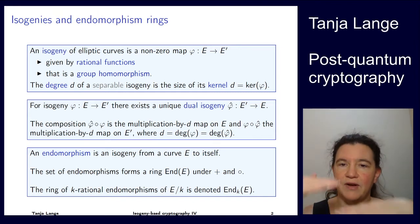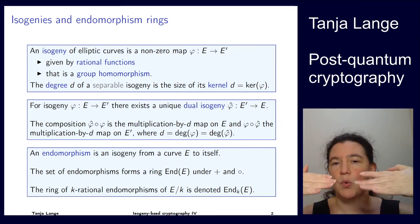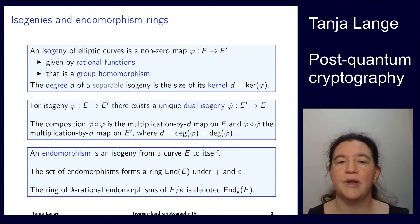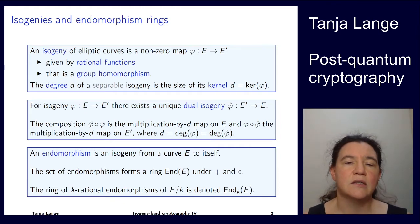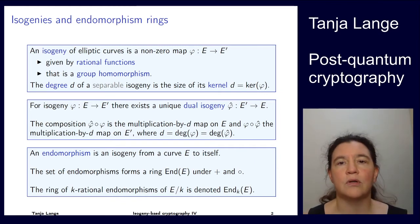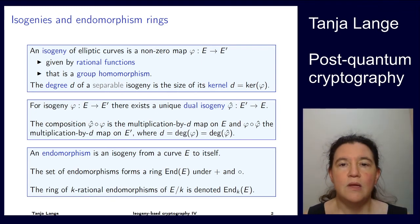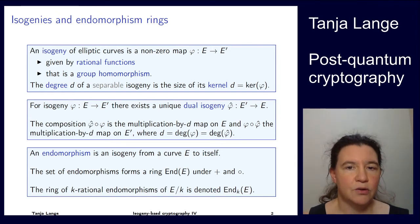That means you have a fraction of polynomials, so there are finitely many elements where the denominator vanishes. Those points are the kernel, along with the point at infinity. The kernel means the elements that land on the point at infinity. We defined the degree of an isogeny to be the size of the kernel.